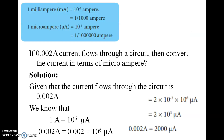One milliampere equals 10⁻³ amperes. For example, if 0.002 amperes of current flows through a circuit, to convert to microamperes: 2 × 10⁻³ × 10⁶ = 2000 microamperes.